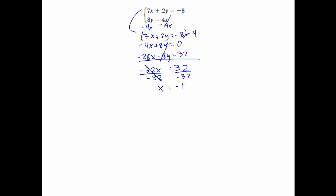Your next step is to plug it back in. I'm going to plug into the second equation because it'll be quick: 8y equals 4 times negative 1, so 8y equals negative 4. Divide by 8, and I'm left with y equals negative one-half. Remember, always write as a coordinate: negative 1 comma negative one-half.